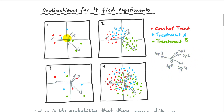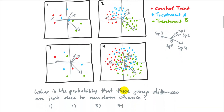Species indicated here with vectors would respond differently — for example, a particular species apparently likes treatment B, and so on. These plots differ a little bit: experiments one and three have smaller sample sizes, with n equals three, while the others are bigger. I could ask you: what is the probability that these group differences are just due to random chance?